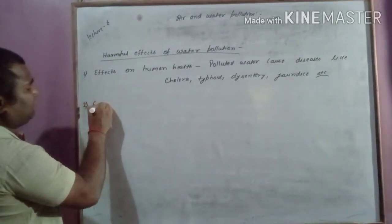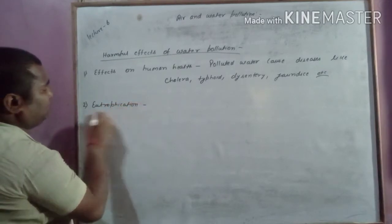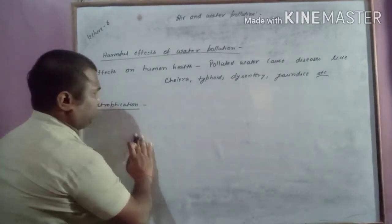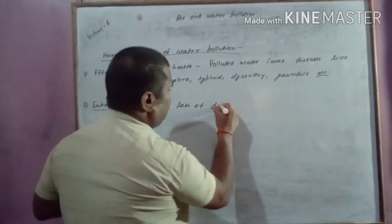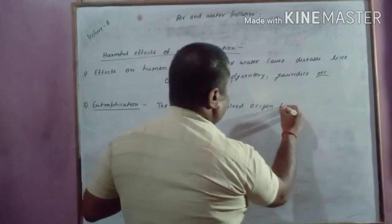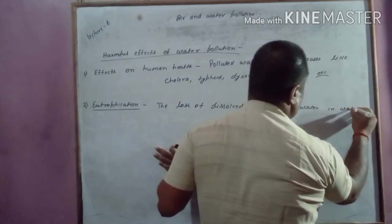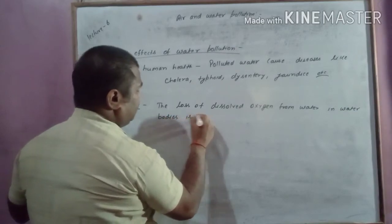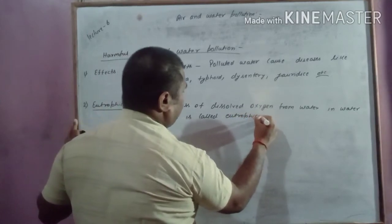The second effect is eutrophication. The loss of dissolved oxygen from water in water bodies is called eutrophication.